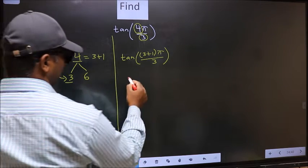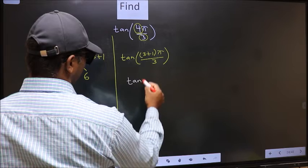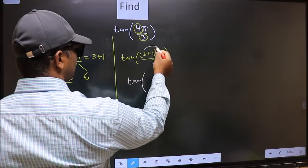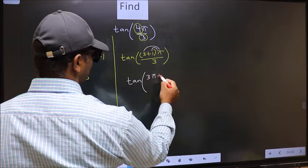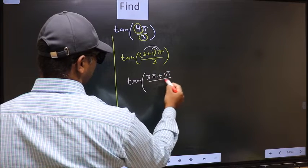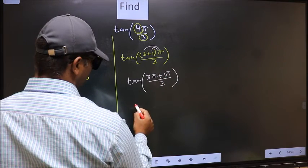Next, tan. Now you should open the brackets. We get 3π plus 1π by 3.